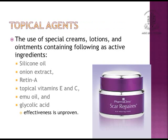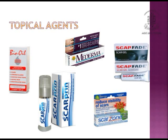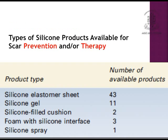Topical agents are very popular nowadays. These creams and lotions are prescribed by general ophthalmic surgeons, plastic surgeons, and dermatologists. The main active ingredients are silicon oil, onion extract, Retin-A, topical vitamin A and C, emu oil, and glycolic acid, but their effectiveness is still unproven. There are an array of scar-removing and -reducing creams and ointments available in the market. They not only treat the scar but also prevent scarring postoperatively if used early in post-operative scar management.